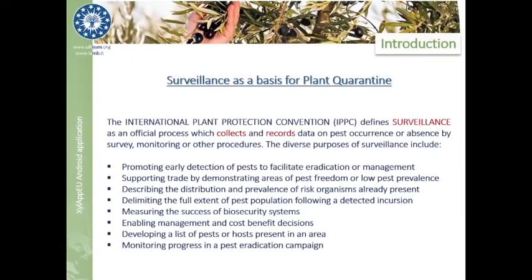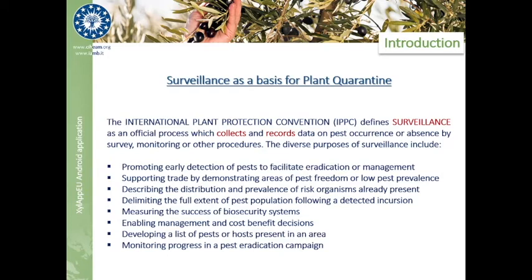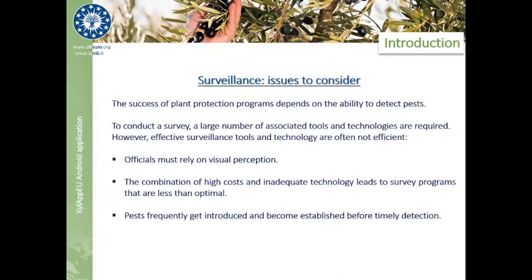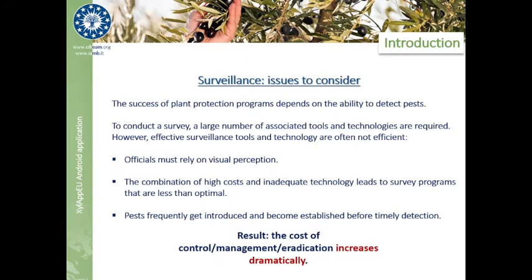What are the main goals of surveillance, and what does surveillance actually mean? The steps adapted for the surveillance process involve a visual inspection of the field, choosing the plants we want to sample and collect, coding and geo-referencing the sample, and in the end delivering the sample gathered to the laboratory. When the sampling is made entirely manually, we have a few but important issues to consider. Besides the fact that officials must rely only on their visual perception, a large number of tools are required, leading to a non-efficient working process. The lack of efficiency can be risky, since the detection of pests before they get introduced is a battle against time.